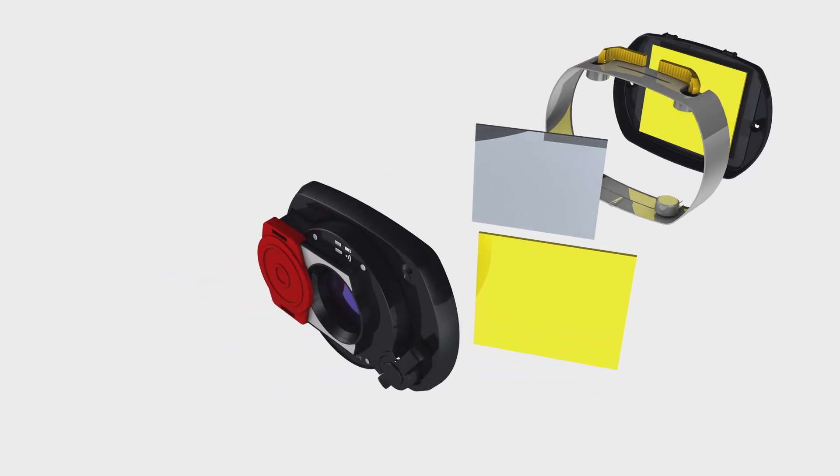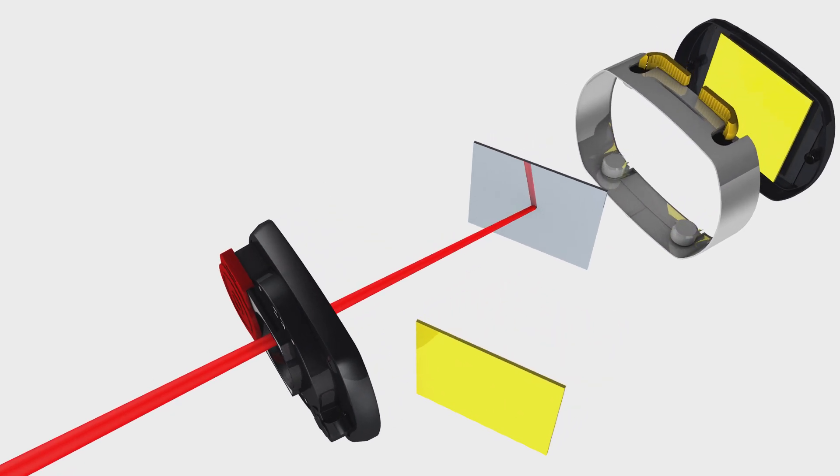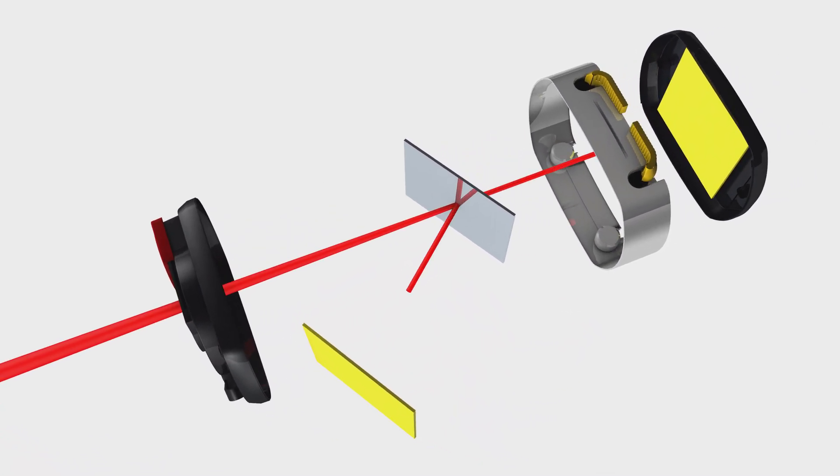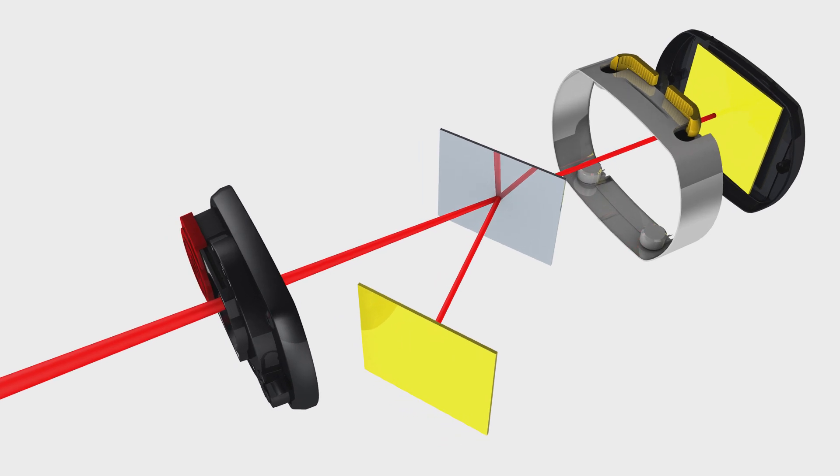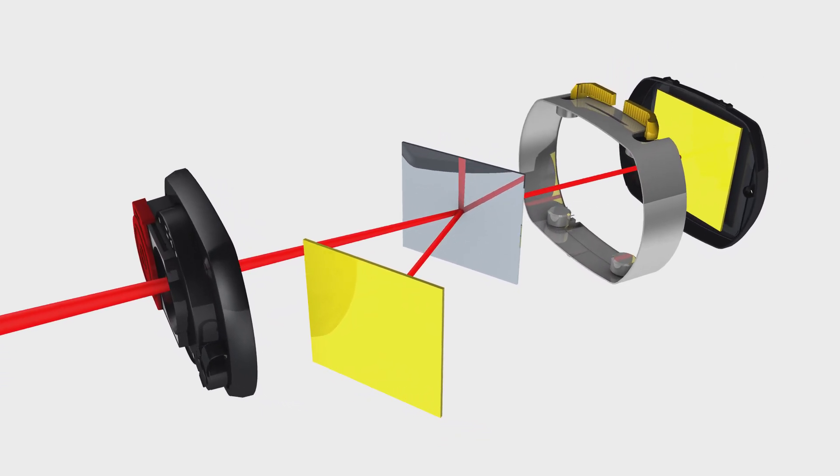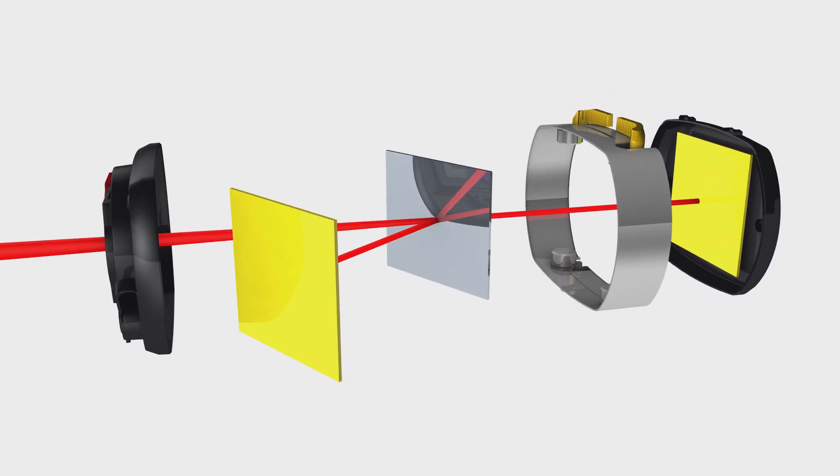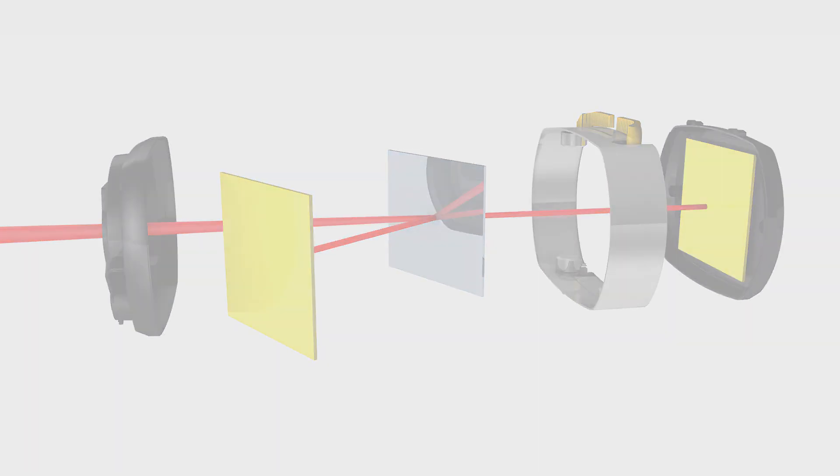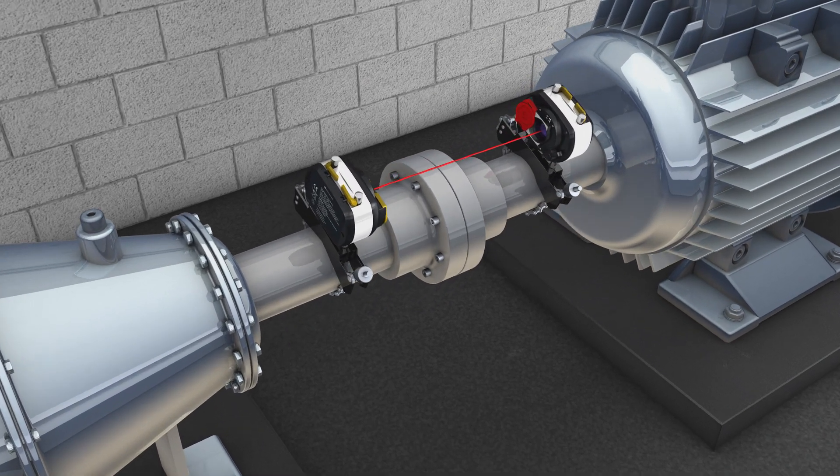A semi-permeable mirror splits the laser beam into two, deflecting one beam onto the front detector and the second onto the rear detector. This worldwide unique technology guarantees that the distance between the first and the second measurement point always stays exactly the same.